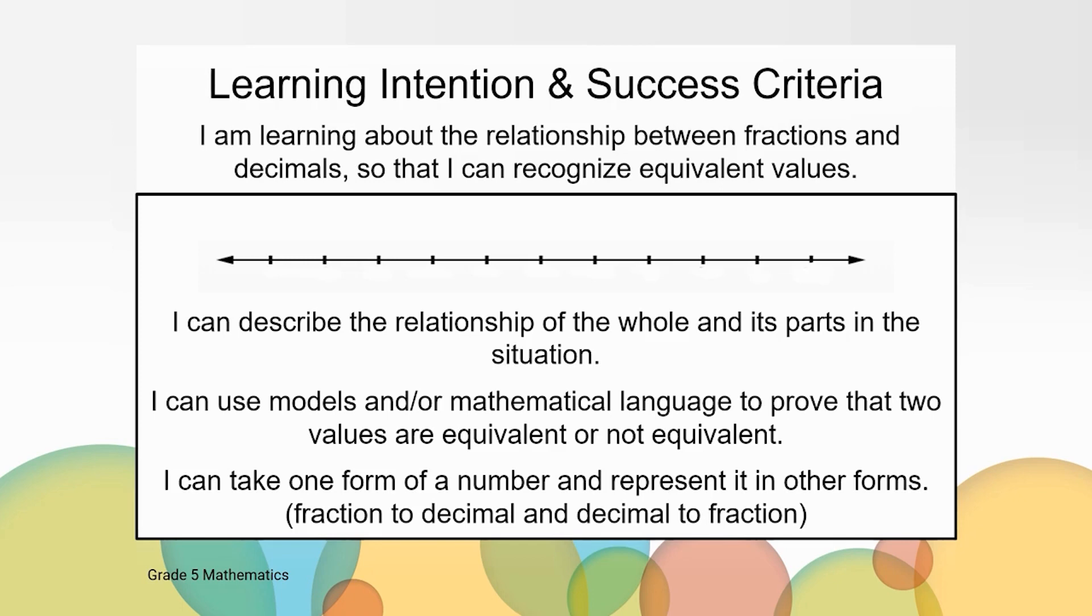Today, use the number line to reflect on where you are in your understanding. If you feel like you understand the success criteria, then you'll rate yourself on the number line towards the right arrow. If you feel like you kind of got it, then you might be somewhere in the middle of the number line. And if you feel like you still need time to practice one of the success criteria, then you'll probably be closer to the left arrow on the number line. I can describe the relationship of the whole and its parts in the situation. I can use models and or mathematical language to prove that two values are equivalent or not equivalent. I can take one form of a number and represent it in other forms. Fraction to decimal and decimal to fraction.